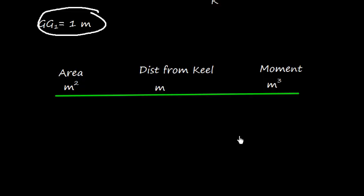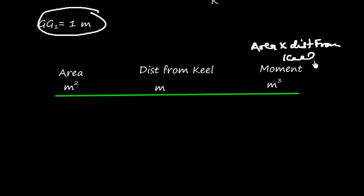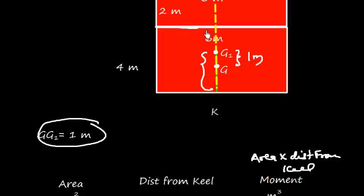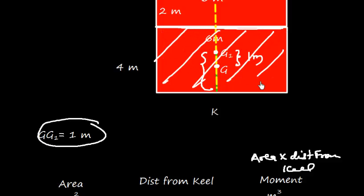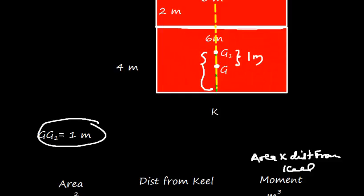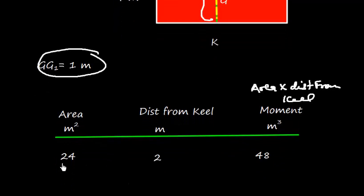Let us take the moment of area. We write the area, the distance from keel in meters, and the moment. The moment is the product of area multiplied by distance from keel. The first area is 6 by 4 equals 24 square meters, and the KG of this area is 2 meters, giving a moment of 48 cubic meters.